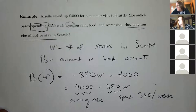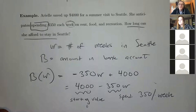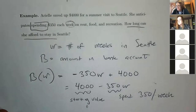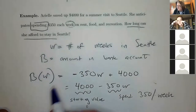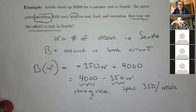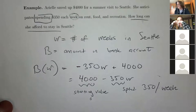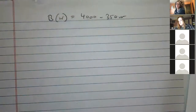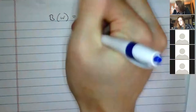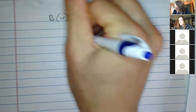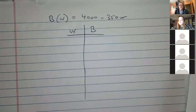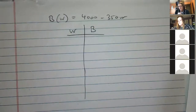To figure out how long I can stay in Seattle, assume I stay until I have $0 left. One way is to make a table. My function is B(W) = 4,000 - 350W. Making a table is basically like making a graph — you're just trying to understand how the function works. Before plugging in values, note that W can't be negative — negative weeks don't make sense — so the domain of B is all positive W.